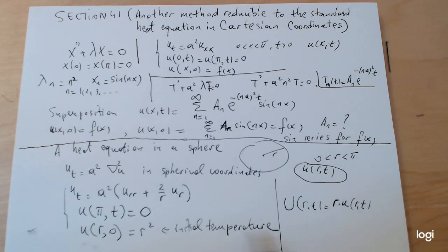This is because once you actually differentiate it twice, you will notice that you will obtain the Laplacian in spherical coordinates, and the corresponding equation in big U will be actually identical to the one in Cartesian coordinates.